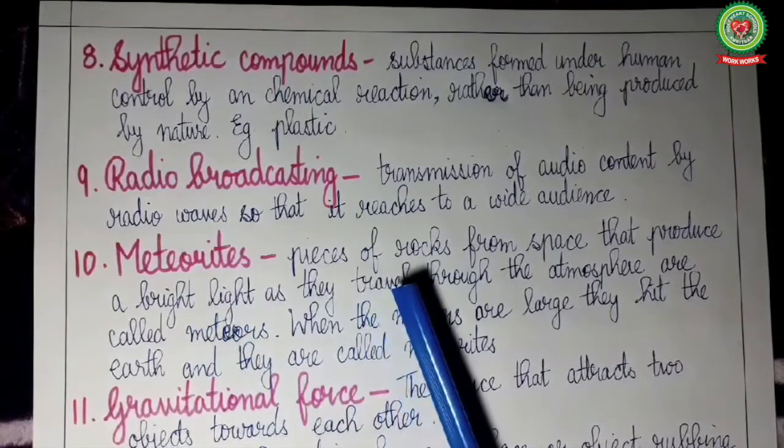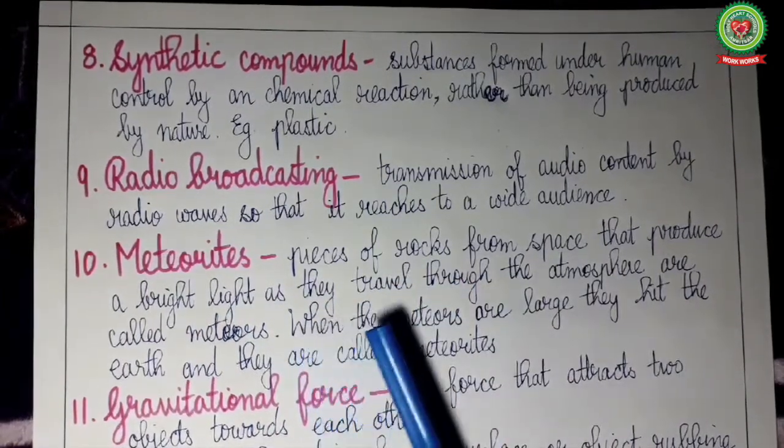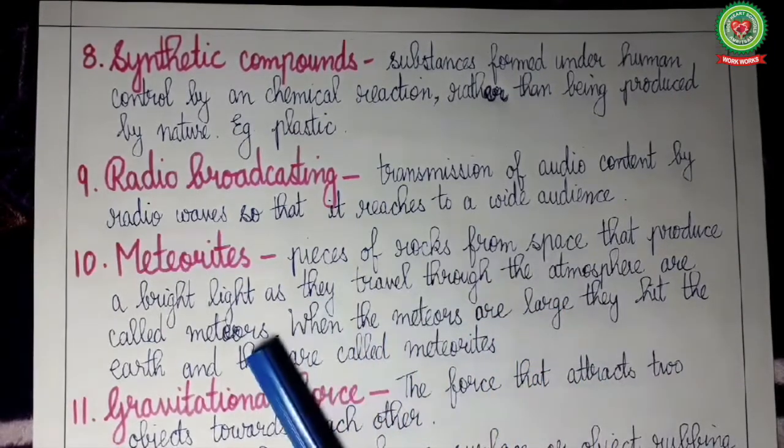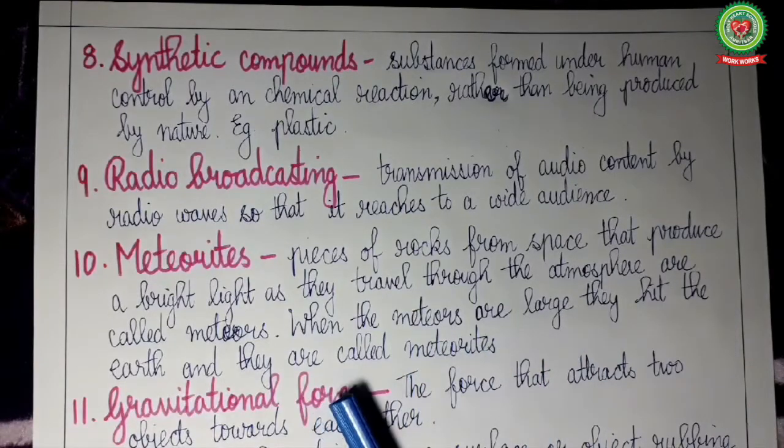Meteorites: pieces of rocks from the space that produce a bright light as they travel through the atmosphere are called meteors. When the meteors are very large they hit the earth and they are called meteorites.